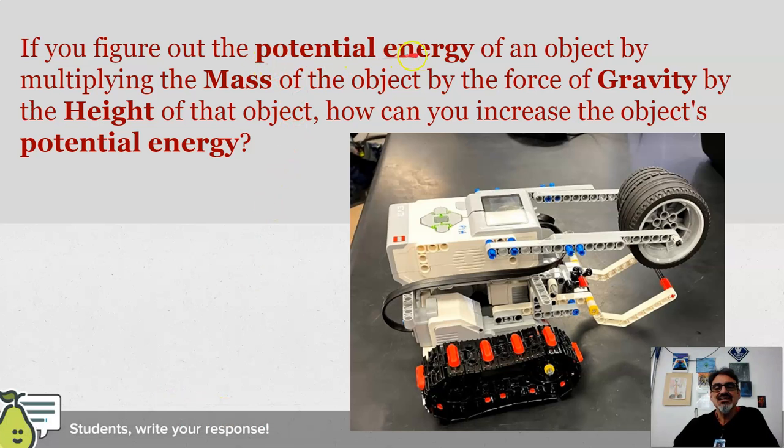So we learned in class how to calculate the potential energy of an object. Basically take its mass and how high it is off the ground and multiply those two by each other, and then by the force of gravity, that 9.8 meters per second squared.